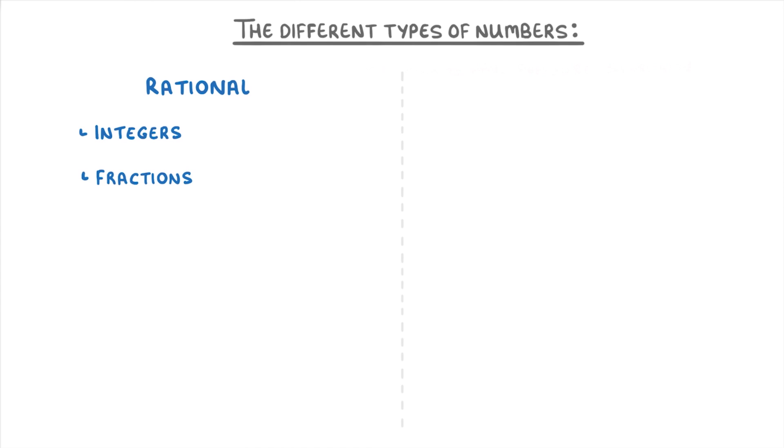In today's video, we're going to be looking at all the different types of numbers that you need to know about. We can split them into two different groups: those that are rational, like integers, fractions, and terminating or recurring decimals, and those that are irrational, like surds.